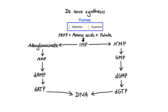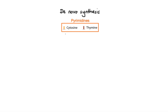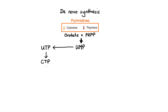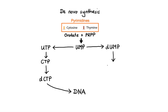Now let's take a look at the synthesis of pyrimidines. Unlike purine synthesis, pyrimidine synthesis begins with the formation of a nitrogenous base called orotate, which combines with phosphoribosyl pyrophosphate to form uridine monophosphate (UMP). As a branch point in pyrimidine synthesis, UMP can be phosphorylated to uridine triphosphate (UTP), aminated to cytidine triphosphate (CTP), and then reduced to deoxy-CTP, which is incorporated into DNA. Alternatively, UMP can be reduced to deoxy-UMP and then converted to deoxy-thymidine monophosphate (dTMP) by an enzyme called thymidylate synthase. In the final step, dTMP is converted to deoxy-thymidine triphosphate (dTTP), which is incorporated into DNA.